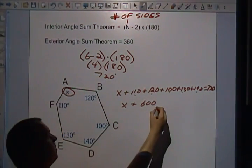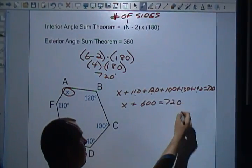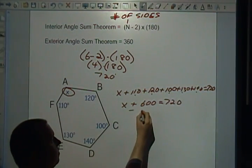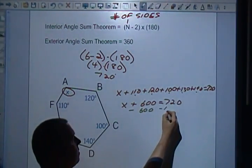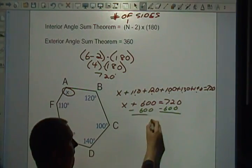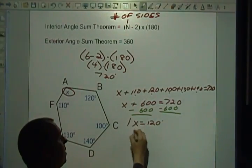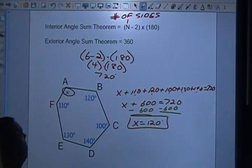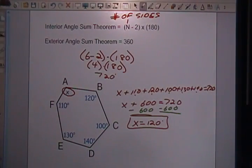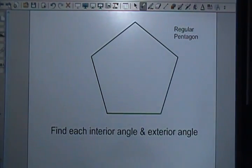If I keep working on this, subtract 600 from both sides, and I end up with x equals 120 degrees. Okay, the next type of problem that we could have - again, we're going to use those same formulas.